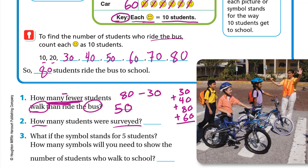So: 0 plus 0 plus 0 plus 0 is 0. Then 3 plus 4 is 7, plus 8 is 15, plus 6 is 21. So we write 21, making it 210 students.